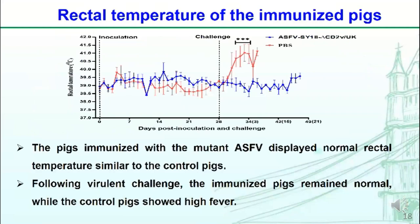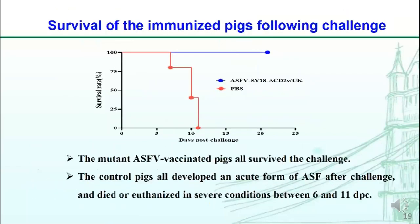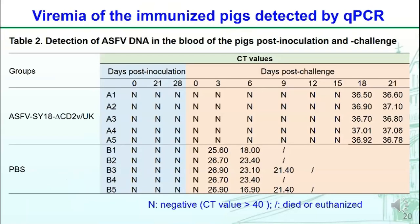The pigs immunized with the mutant virus displayed normal rectal temperature, similar to the control pigs before challenge. Following viral challenge, the immunized pigs remained normal while the control pigs showed high fever. The mutant virus-immunized pigs all survived, but the control pigs all developed the acute form of ASF and died or were euthanized in severe condition between 6 and 11 days post-challenge. After challenge, only low-level viral DNA copies were detected from the mutant virus-immunized pigs after 18 days post-challenge, while high-level viral DNA copies were detected in the control pigs.